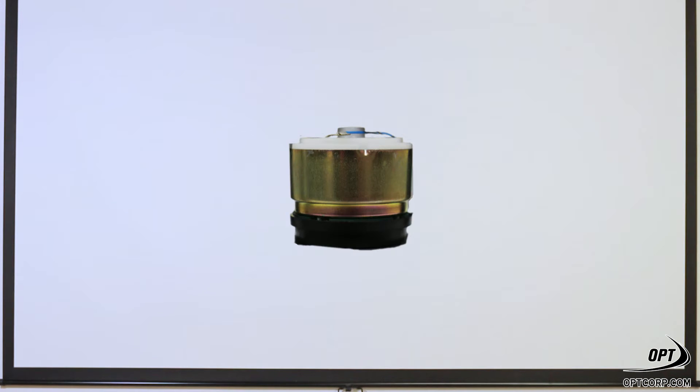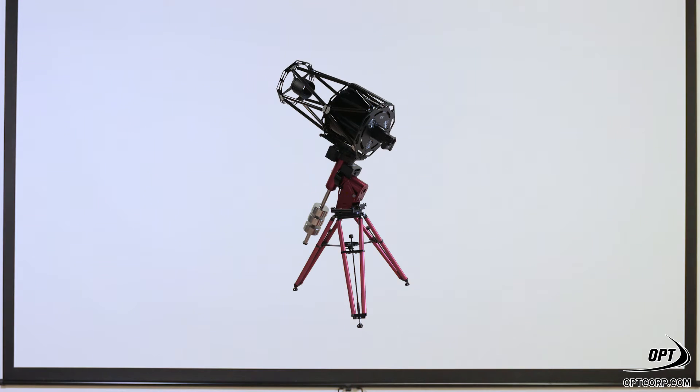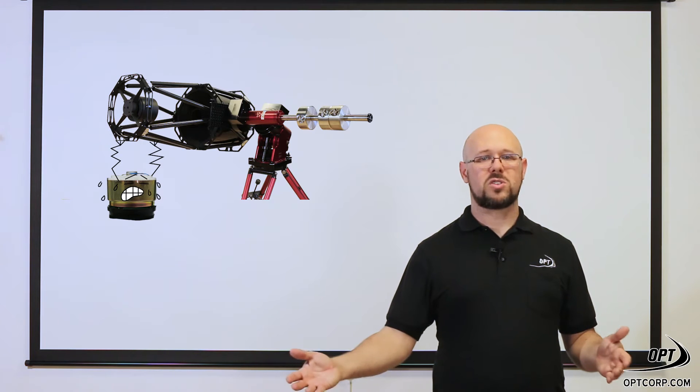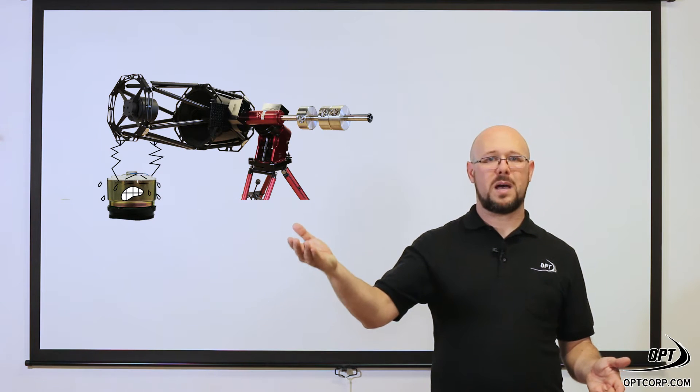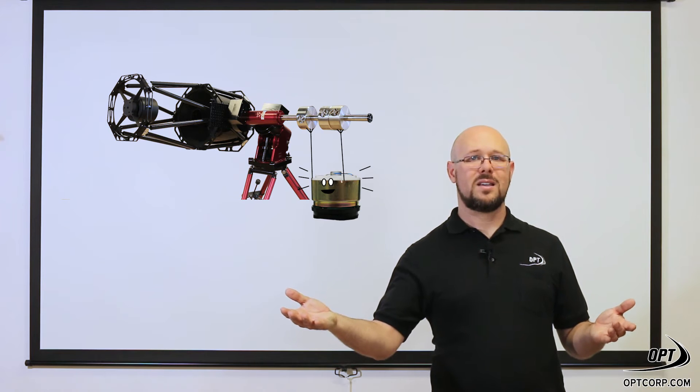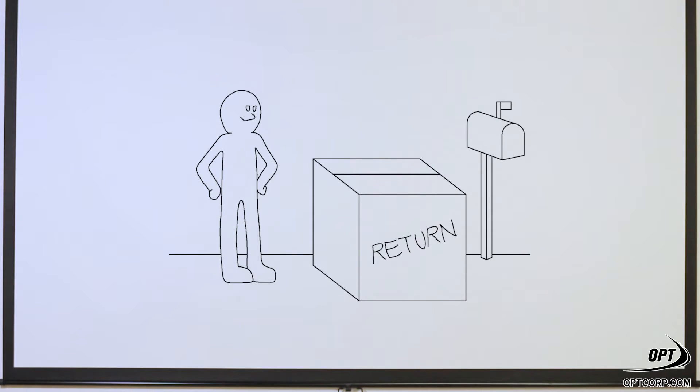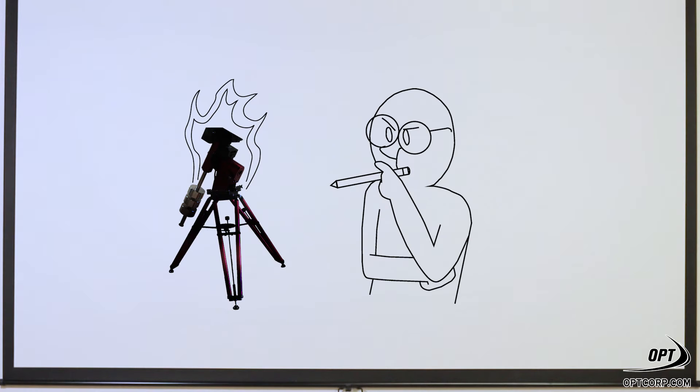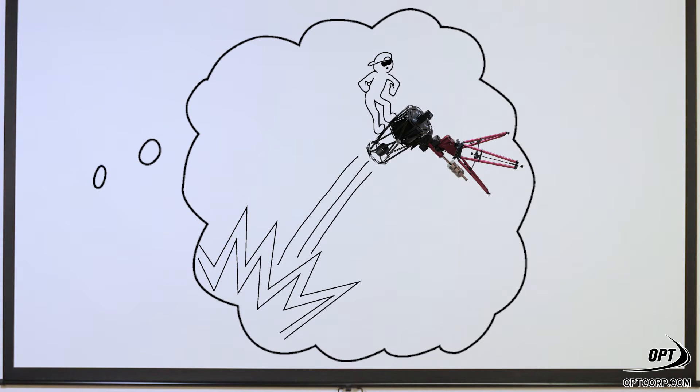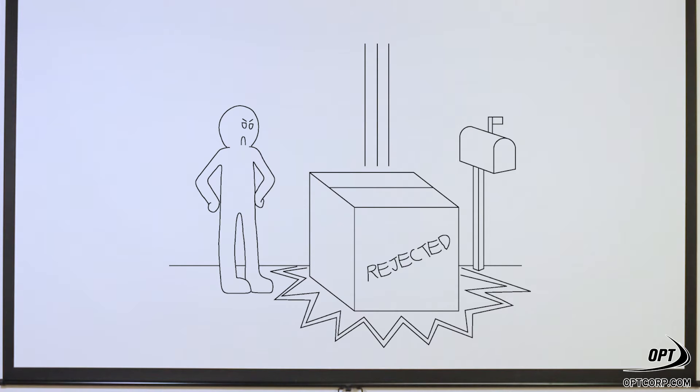Secondly, the longevity of the motors is affected if you're out of balance. You have to consider that if the motors are working harder to push the telescope up compared to the counterweights, it's going to shorten the lifespan of those motors over time and you may find yourself having to send your mount in for warranty repair. But depending on the nature of damage, using the mount incorrectly might not be covered by the warranty.